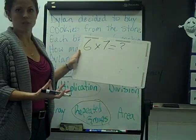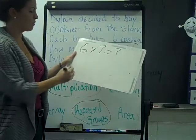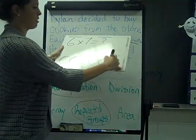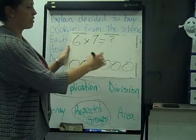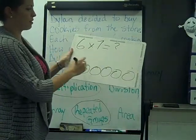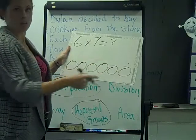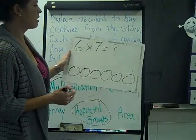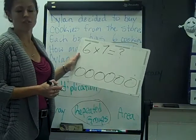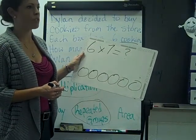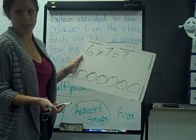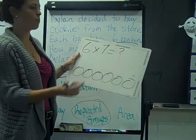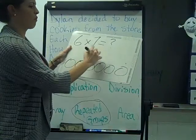You can either know your multiplication facts and get the answer, or you could do six circles and put seven dots in each one and count them up. Or you can use the multiplication you do know. Like six times five is thirty, so six times six is thirty-six — six more. Six times seven would be six more than that, which is forty-two.